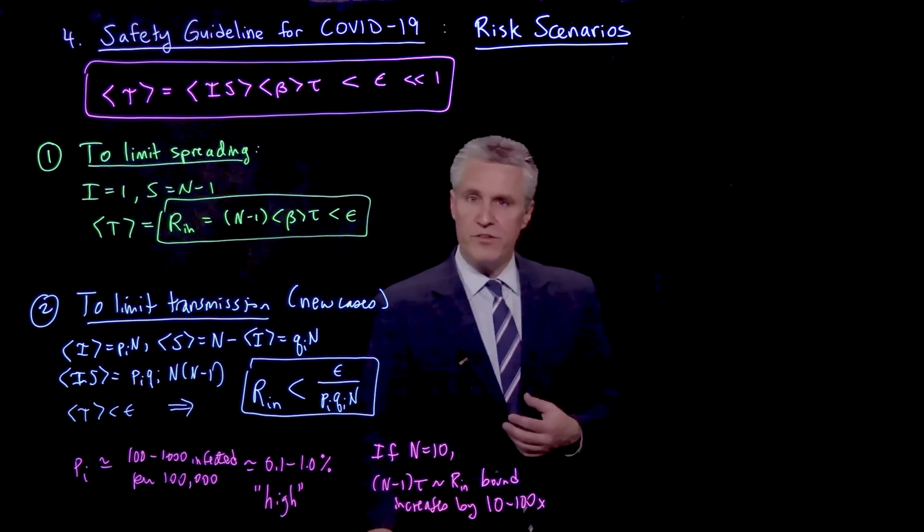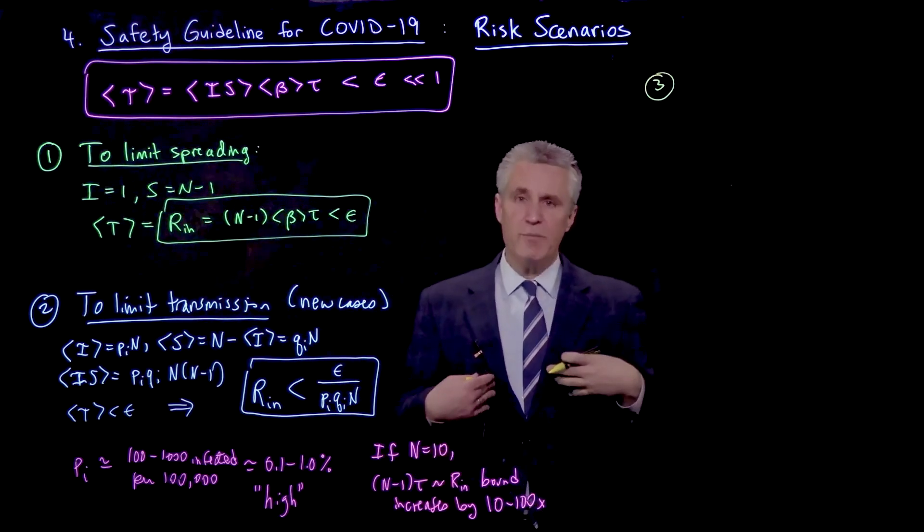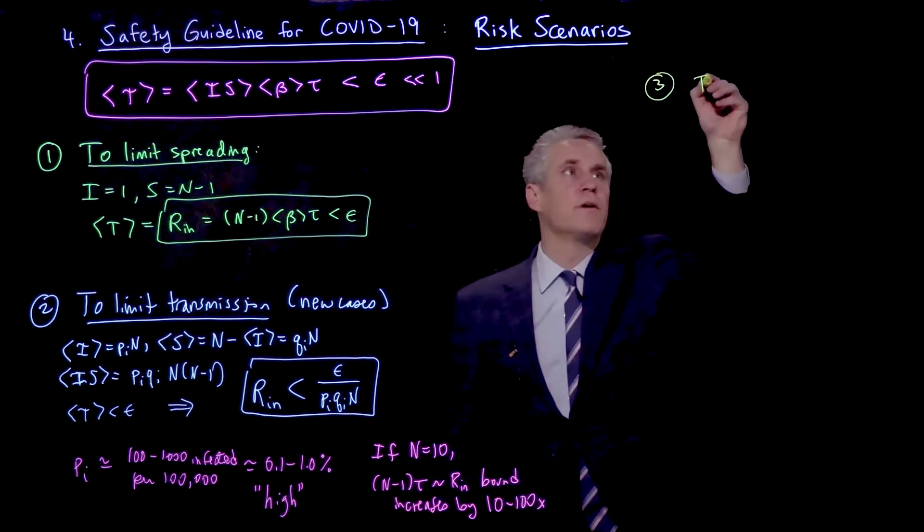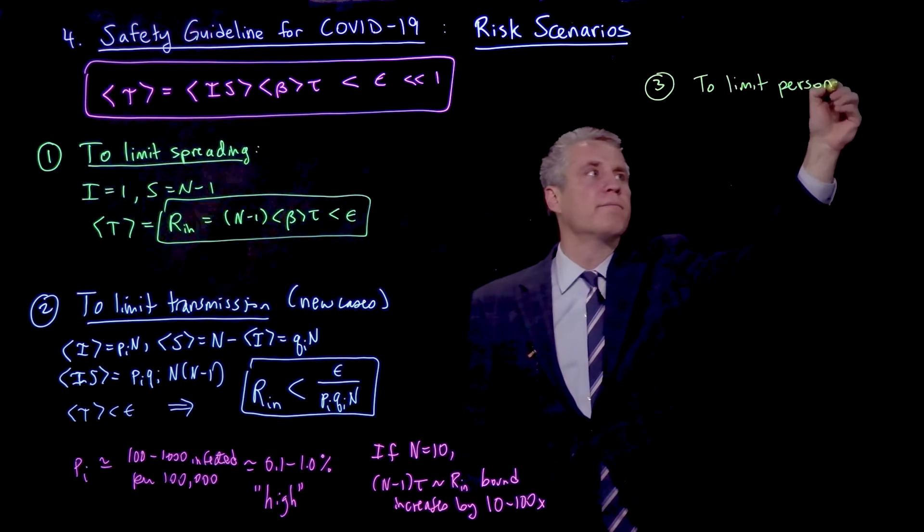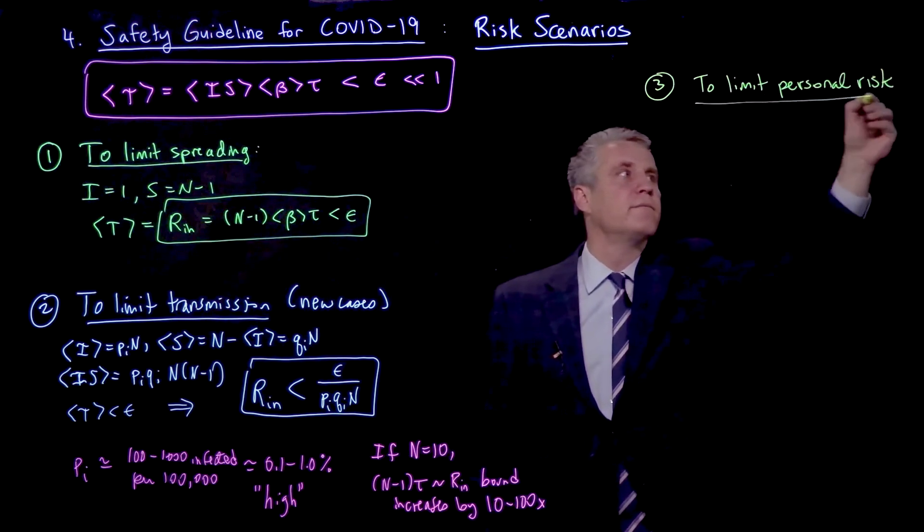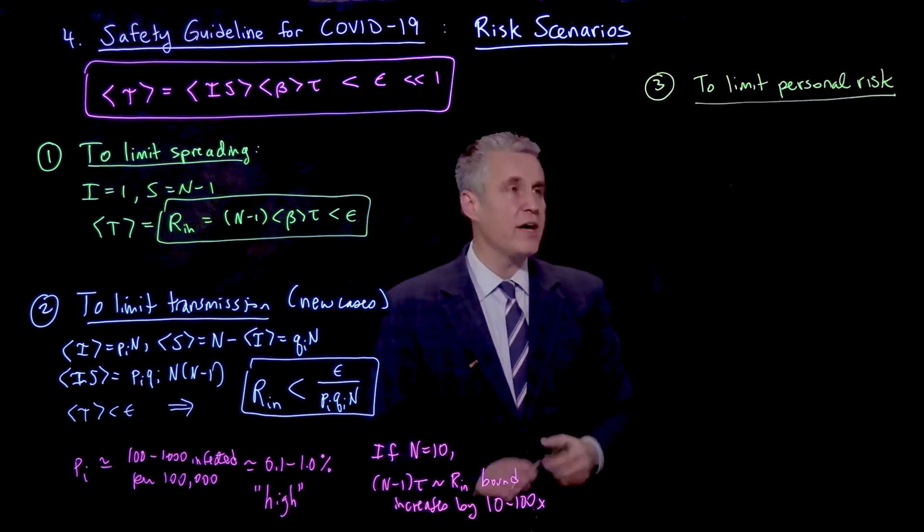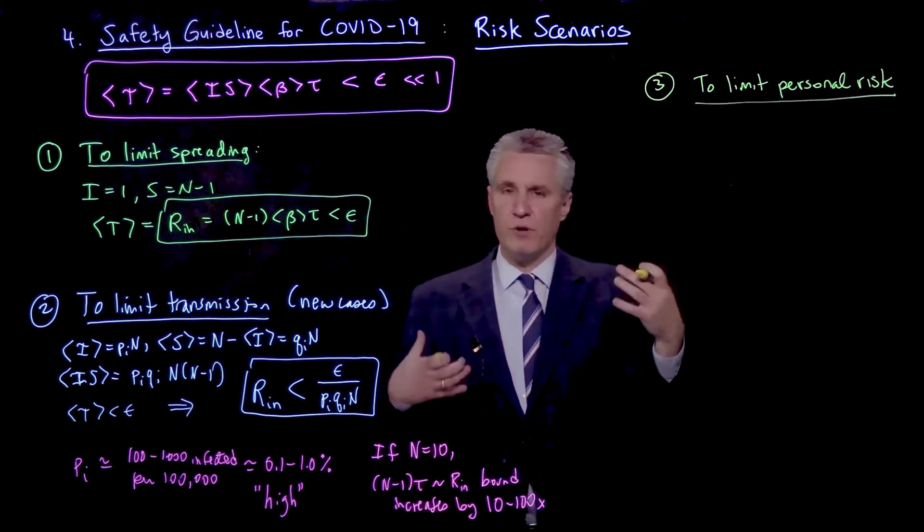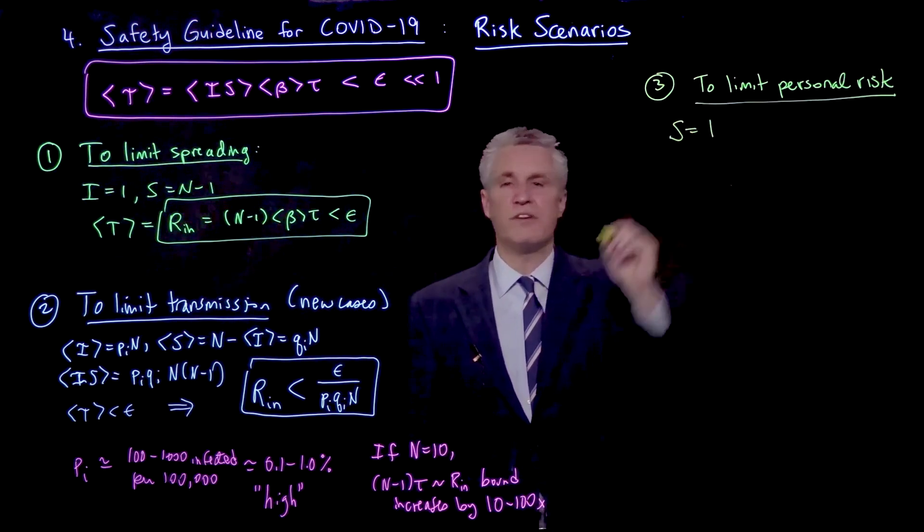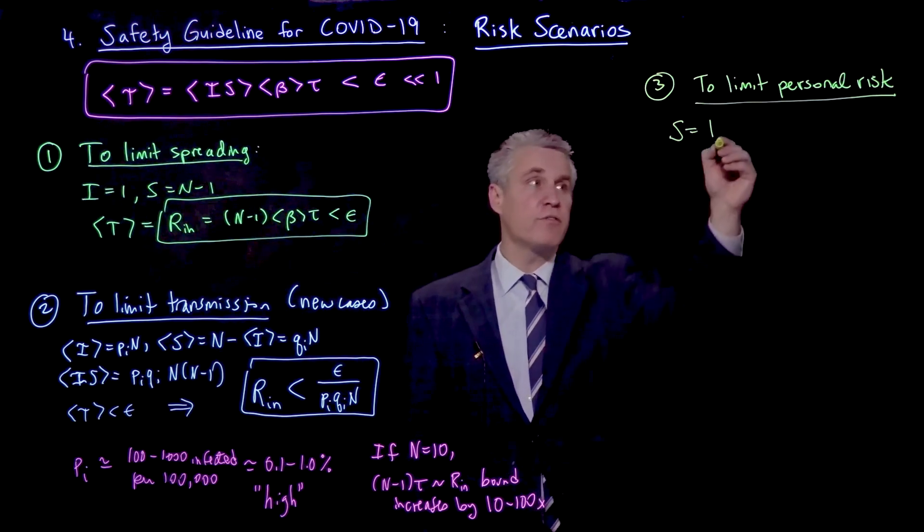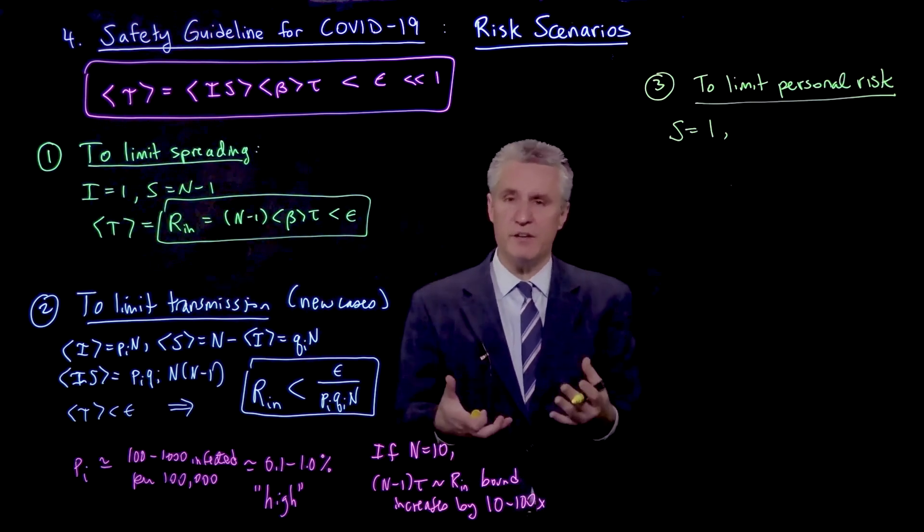There is a third risk scenario that is also of interest, which is to limit my personal risk for a given individual. So in this case, we have a situation where I only care about myself, one particular person in the room. So the number of susceptibles is now fixed at 1.